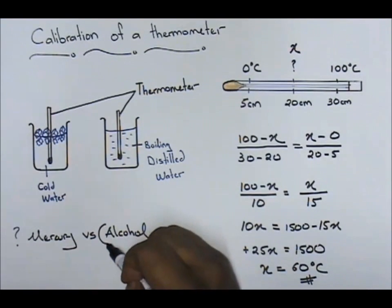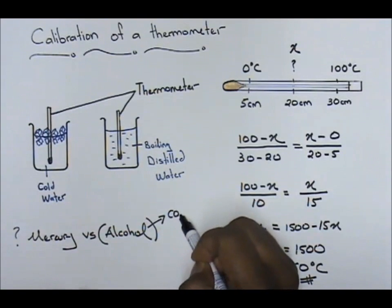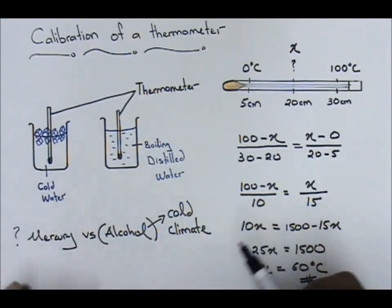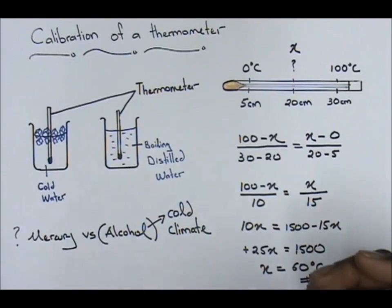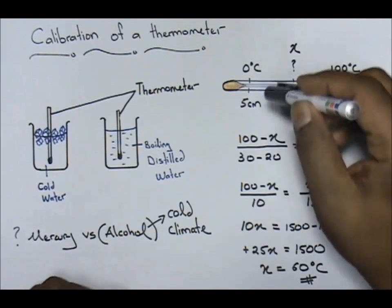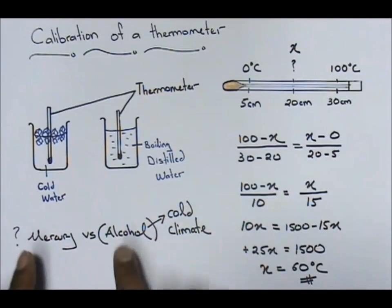The very important difference between mercury and alcohol is when you are measuring temperature in cold climate areas. Very cold climate areas, you have to use alcohol. This is for cold climate areas. Mercury you can use in any normal conditions, but alcohol is especially for cold climates. So if I'm giving you a question about an expedition up north pole, what type of thermometer should they use? You tell alcohol-based thermometer, not mercury-based thermometer. But do a little bit of research about the advantages and disadvantages of mercury and alcohol. Thank you.